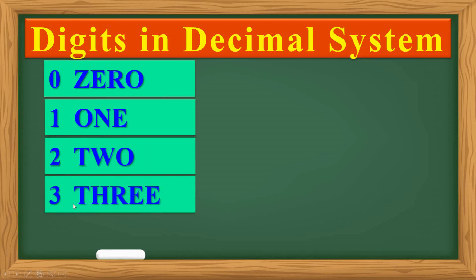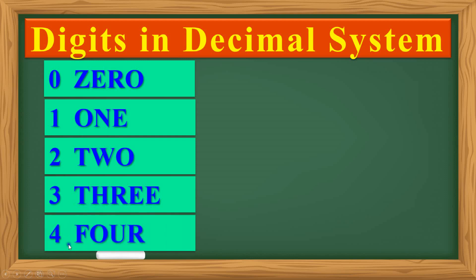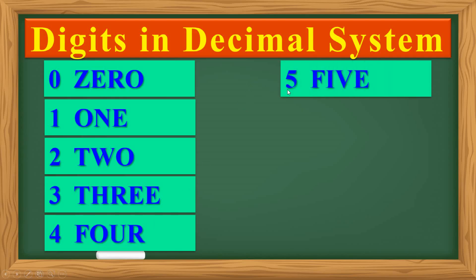Three. T-H-R-E-E. Three. Four. F-O-U-R. Four. Five. F-I-V-E. Five.